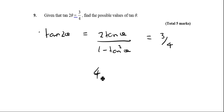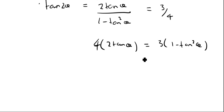Once we've got that, if we rearrange this, we're going to end up with 4 lots of 2 tan θ is equal to 3 lots of 1 minus tan squared θ. And if I rearrange that a little bit, I should end up with 3 tan squared θ plus 8 tan θ minus 3 is equal to 0.